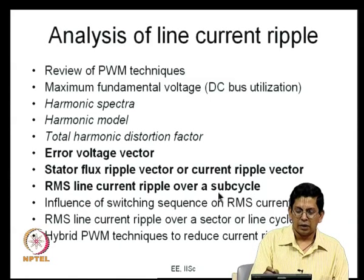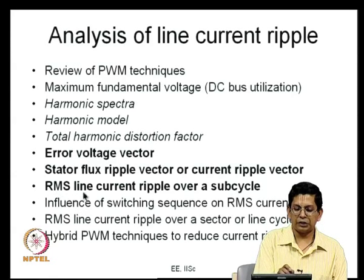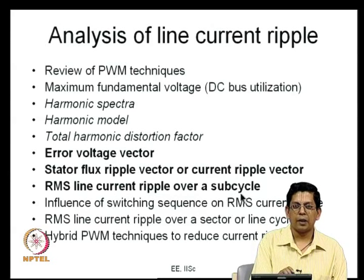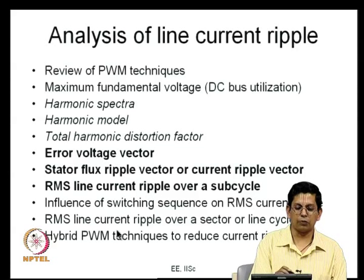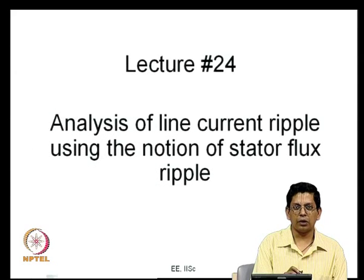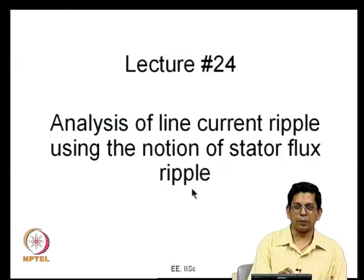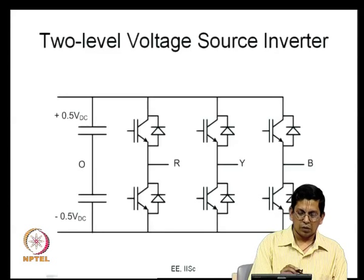The current ripple is proportional to the integral of the error voltage vector. The integral of the error voltage vector is what we call the stator flux ripple vector, which is a measure of the current ripple vector. We can use this to study the RMS line current ripple over a sub-cycle. Today's lecture focuses on analysis of line current ripple using the notion of stator flux ripple.